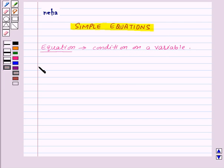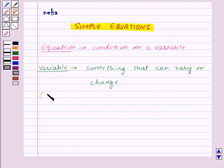Variable means something that can vary or change. A variable takes on different numerical values, that is its value is not fixed, and variables are denoted by letters of the alphabet such as x, y, z, a, b, etc. Now in an equation,